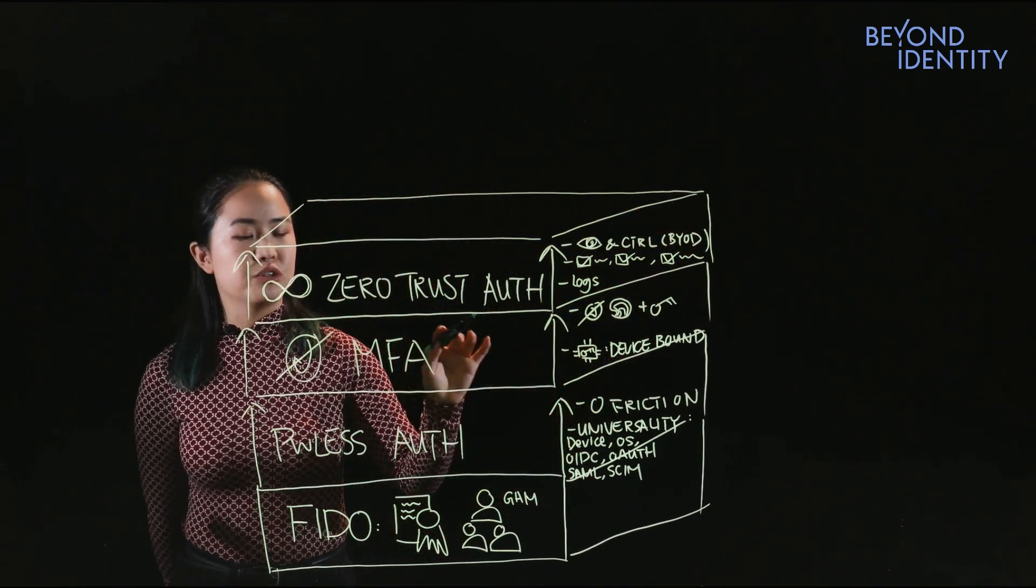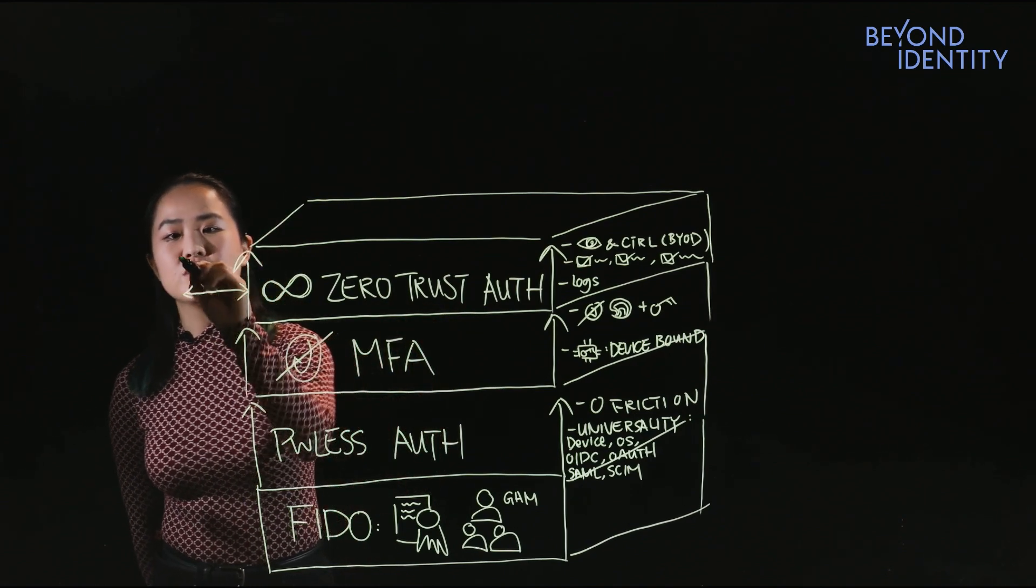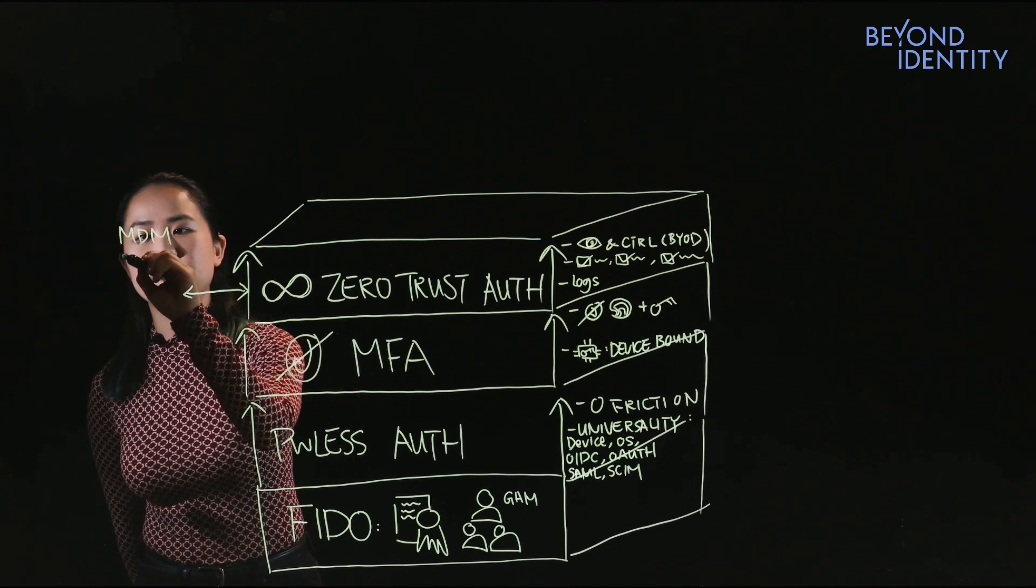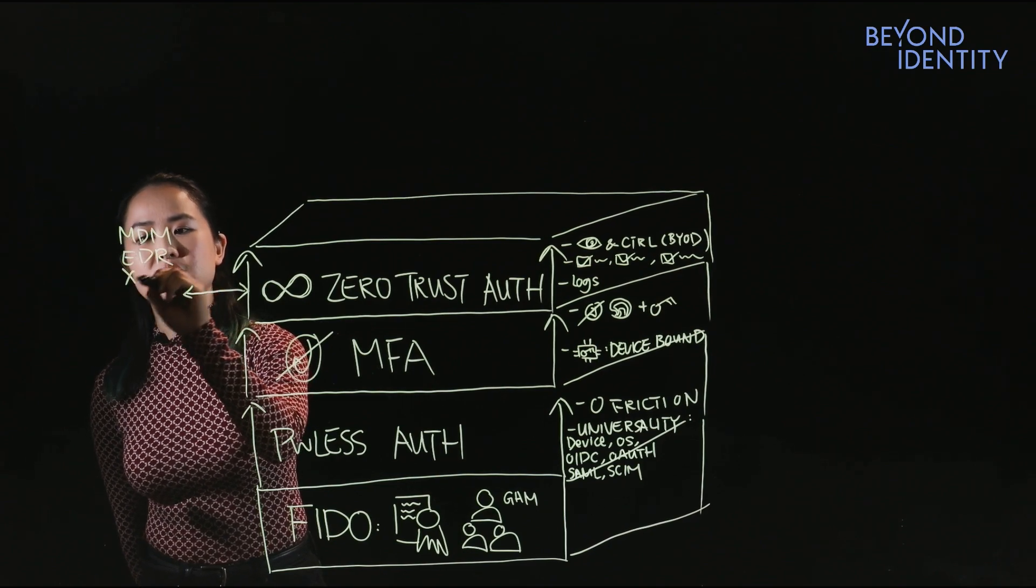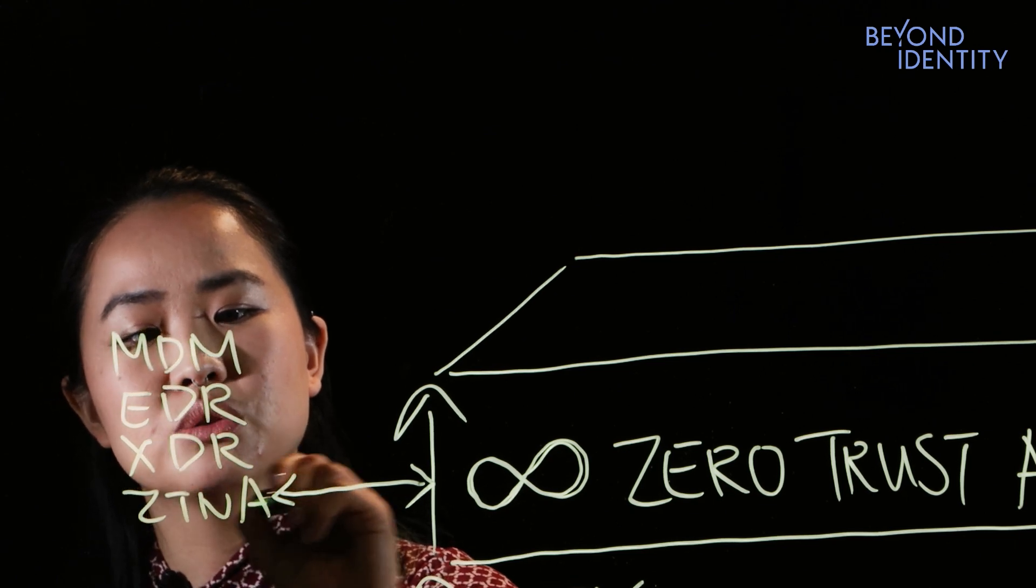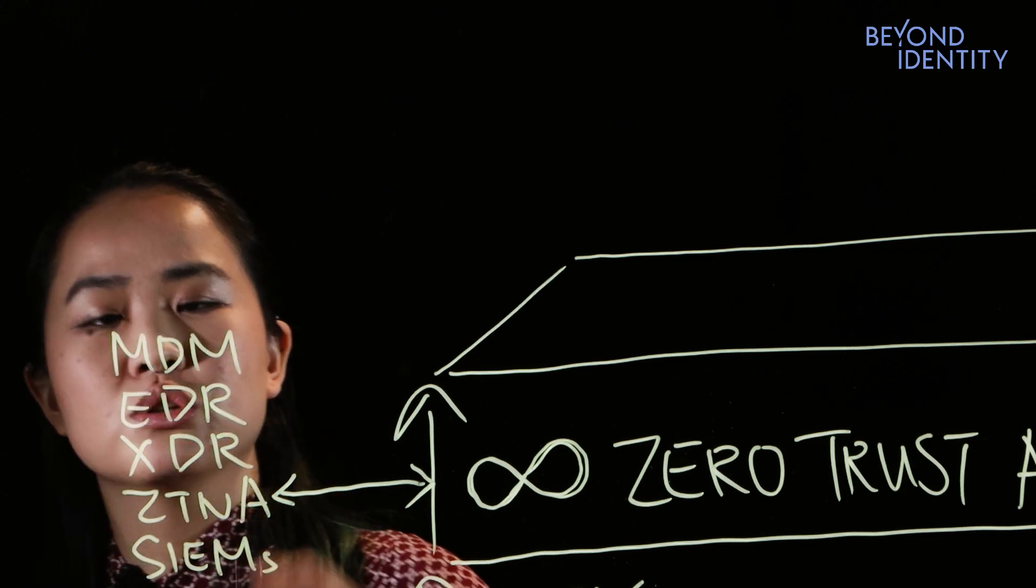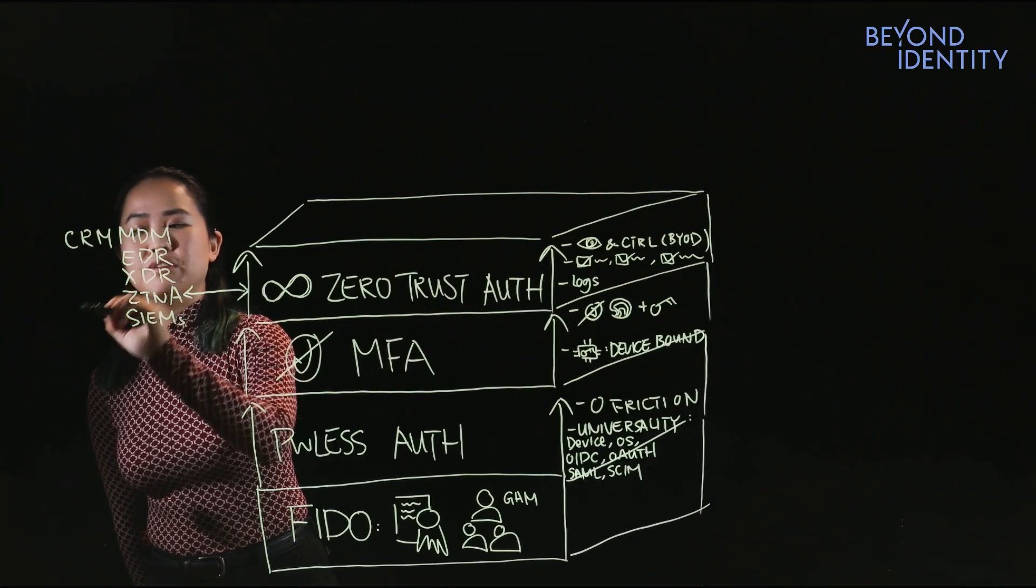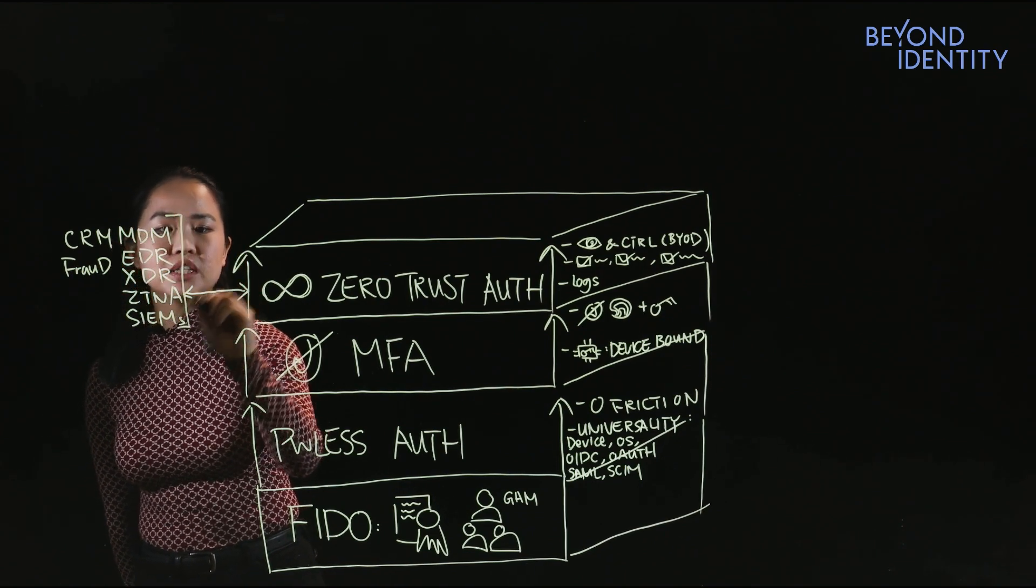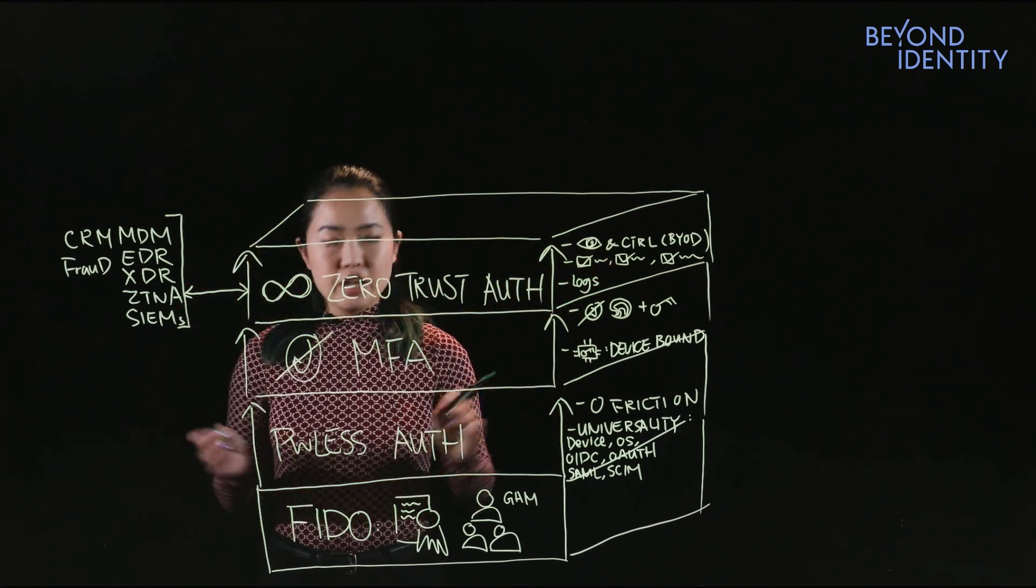One important note about zero trust authentication, it takes a village. So we also provide out-of-box integrations with MDMs, so your endpoint protection tools, EDRs, next generation EDRs, XDRs, your zero trust network access tools, as well as your SIMs and your logging tools. And in the CIAM scenario, maybe you have a CRM, your fraud tooling, etc.